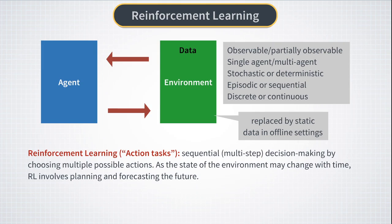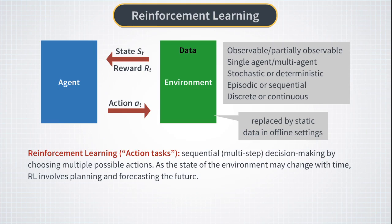We called such tasks 'action tasks' and said they involve perception tasks as an intermediate step, because optimizing for the goal involves planning and forecasting into the future. The agent observes states S_t of the environment and then performs an action A_t. As a result, the agent gets a reward R_t while the system moves to a new state S_{t+1}.